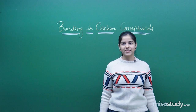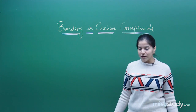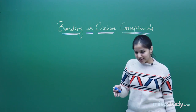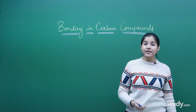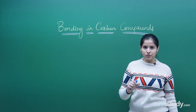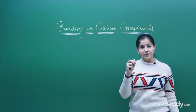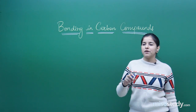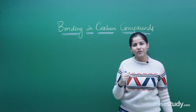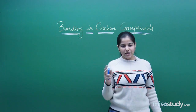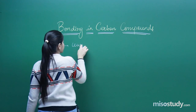Hello everyone, welcome to the chemistry sessions. In the last session we were discussing about how carbon is so versatile, and we had taken one step ahead to understand how the different bonding occurs in covalent compounds. Today we are going to start with carbon. In the previous session we discussed how covalent bonding takes place in inorganic species, especially using Lewis dot structures.